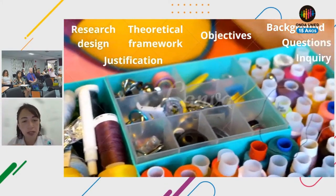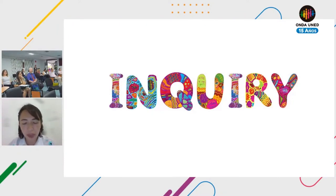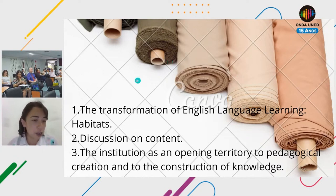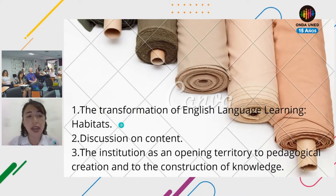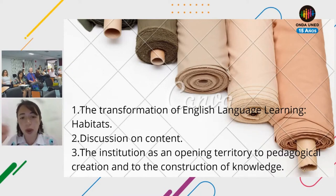We begin with the inquiry also as a quilt, because a quilt puts together many pieces, and the inquiry comes out of many pieces too. The pieces of fabric show us the inquiry and explain three main concepts: first, the transformation of English language learning as habitats; second, discussion on content; and third, institution as an opening territory for pedagogical creation and construction of knowledge. The first concept — transformation of English language learning — looks at how students inhabit different types of atmospheres depending on how they lead their English learning process.